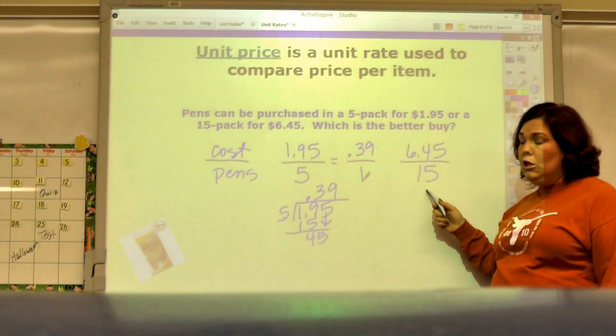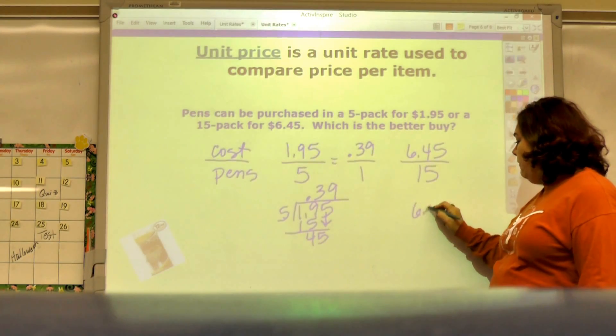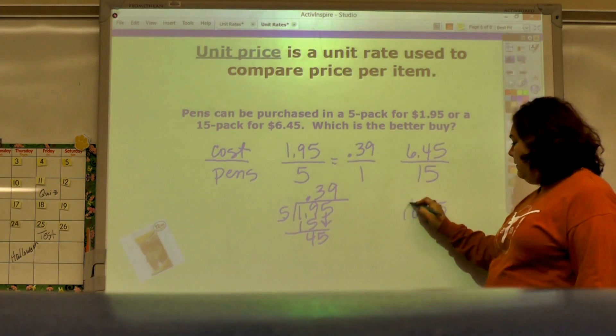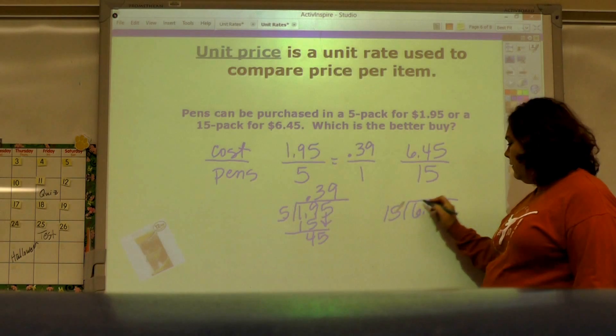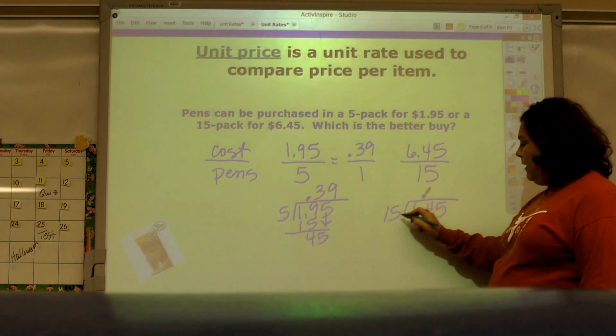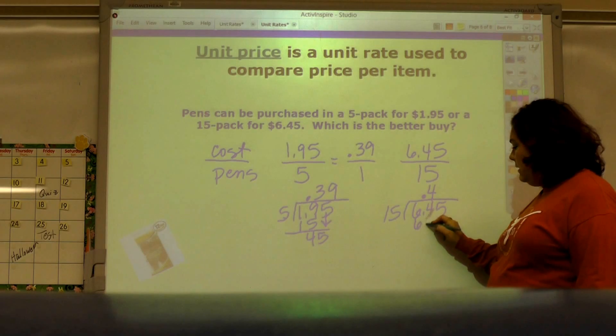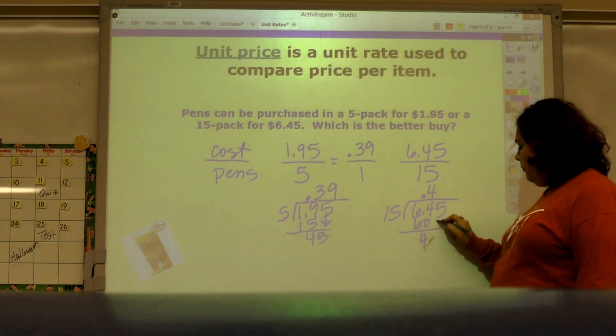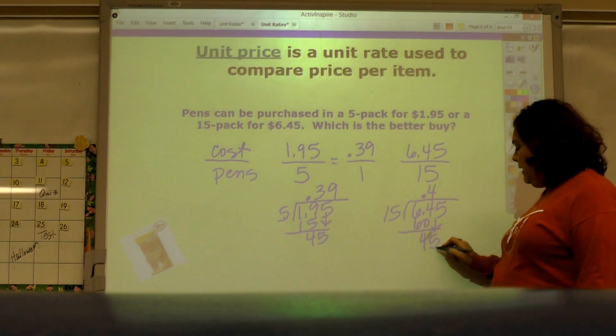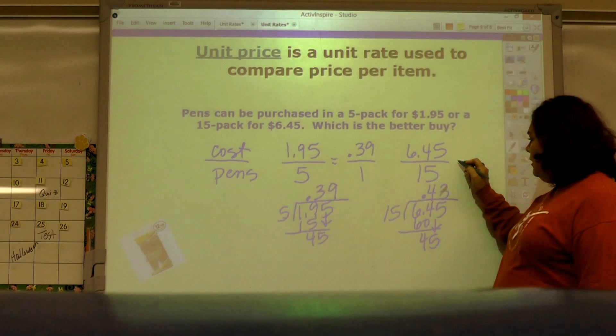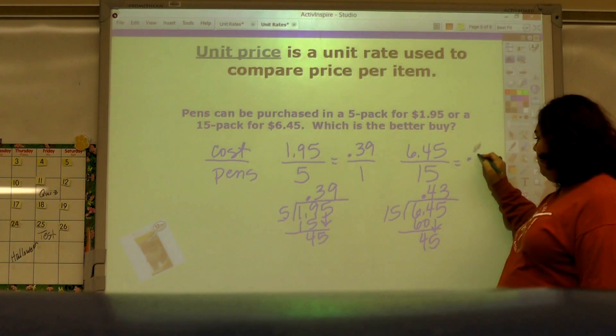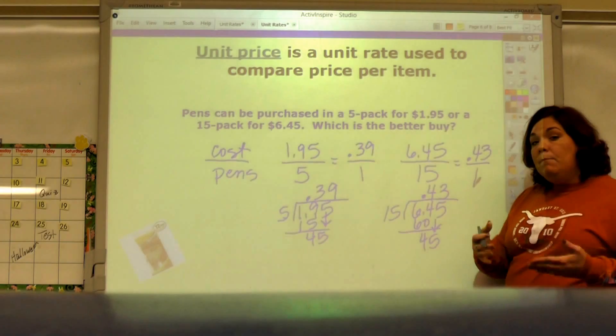It's asking me for the better buy, so I've got to figure that out for this too. 6.45 divided by 15, put my decimal place straight up, that goes in 4 times, that's 60, bring down the 5, 15 goes into 45 three times. So this one is saying 43 cents for one pen.